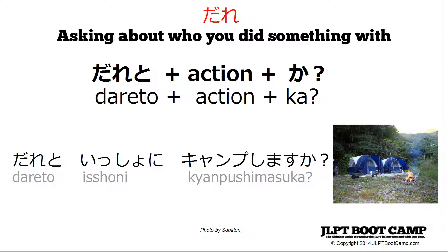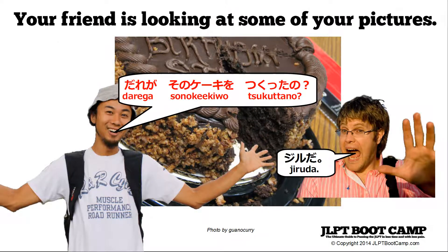Let's look at one more dare pattern. Your friend is looking at another picture and asks, 'dare ga sono keiki o tsukuta no?' And you respond, 'Jiru da.' He's asking who made this cake. 'Dare ga' marks the subject — the person we don't know, the person doing the action. 'Sono keiki' is the cake, and 'tsukuta' is the past tense of 'to make.' 'No' is a casual way to form a question.